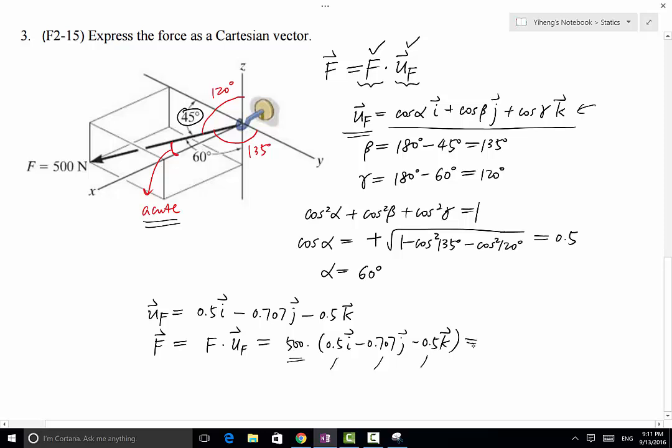and we can get our force Cartesian vector 250i minus 354j minus 250k, and the unit of newton. So that is our force vector represented as a Cartesian vector.